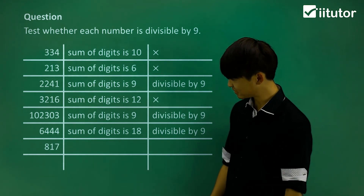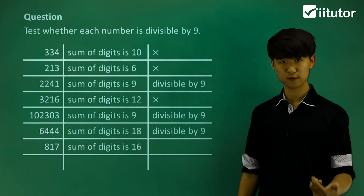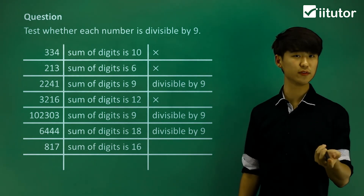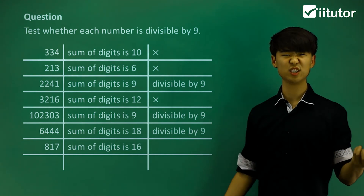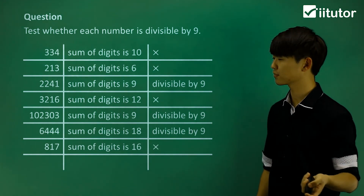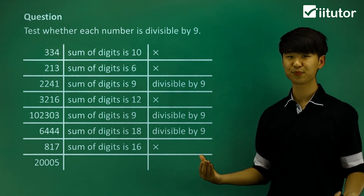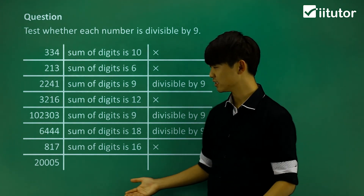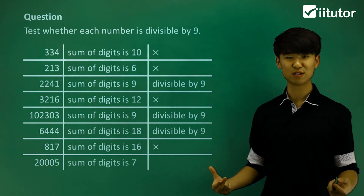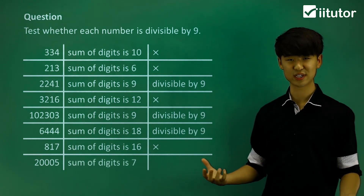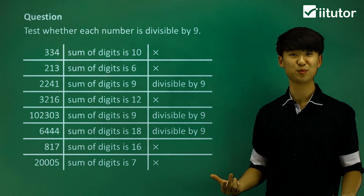Now 817 gives me a sum of digits of 16. Now 16 is not divisible by 9, so 817 is not divisible by 9. And finally, 20005. If we add all the digits, 2 plus 0 plus 0 plus 0 plus 5, my sum of digits is 7, which is not divisible by 9. So this number here is not divisible by 9.